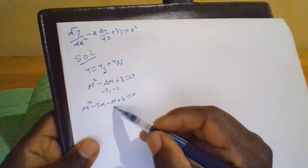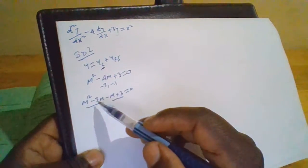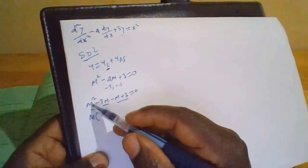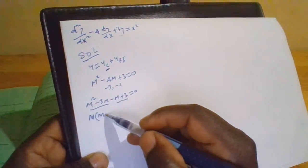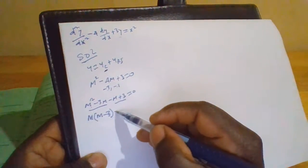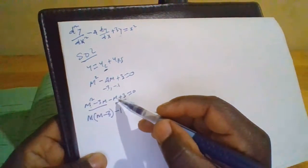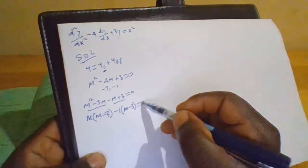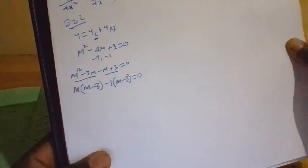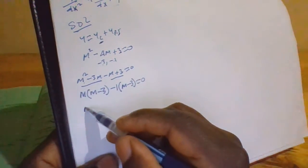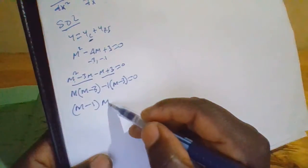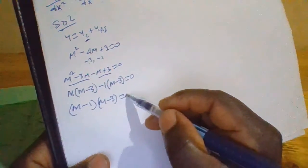We group them into pairs and factorize. The common factor between m squared and 3m is m; we take it out, leaving m minus 3. Then negative 1 is the common factor between m and 3, so we take it out, giving negative 1 into m minus 3, which equals zero.